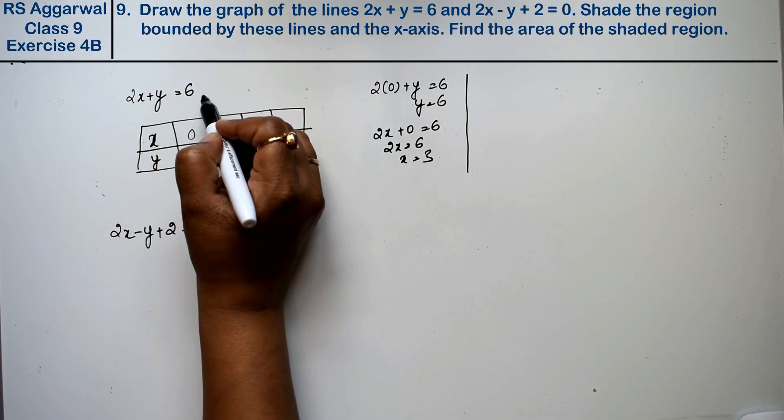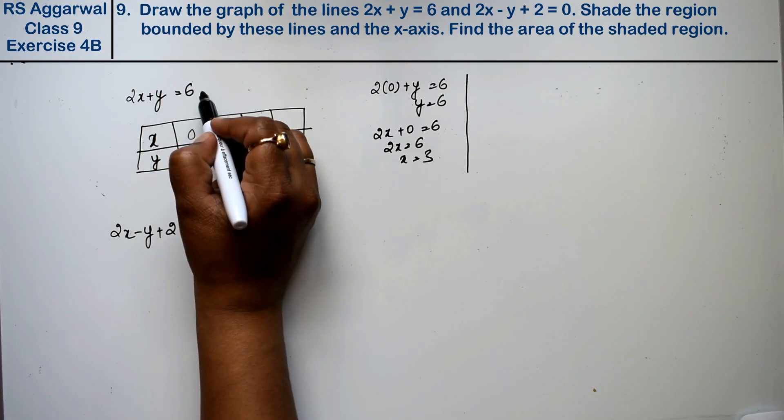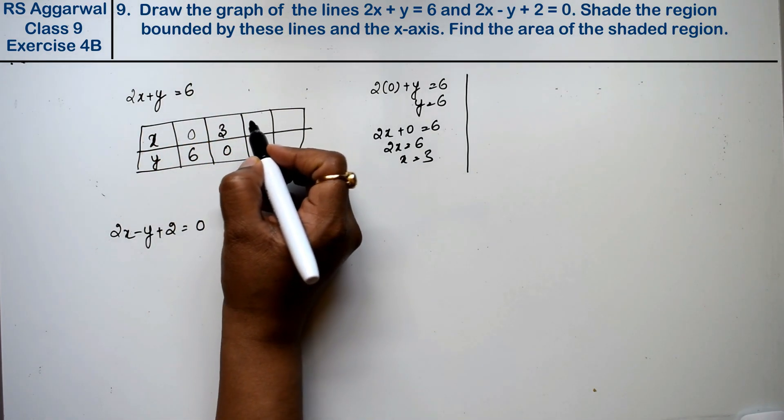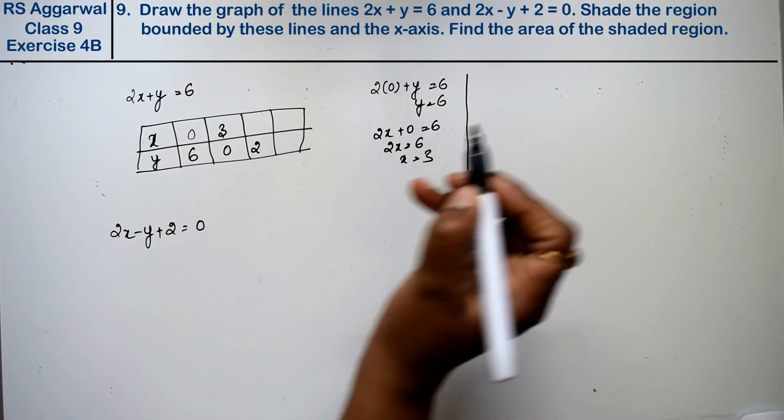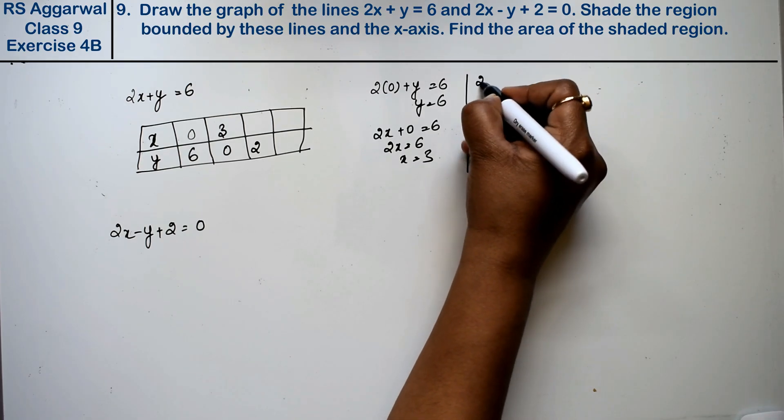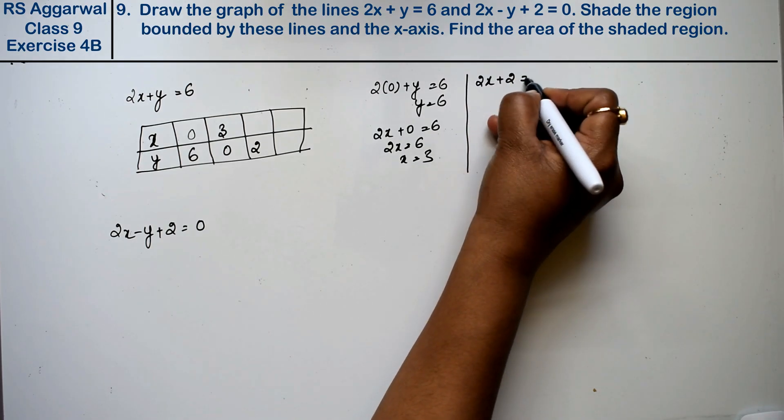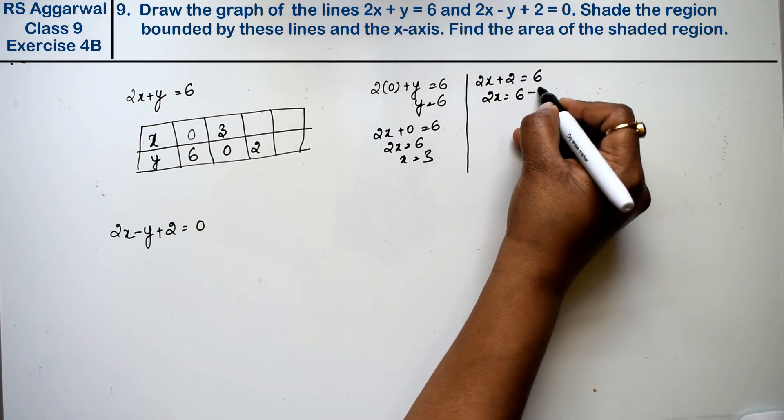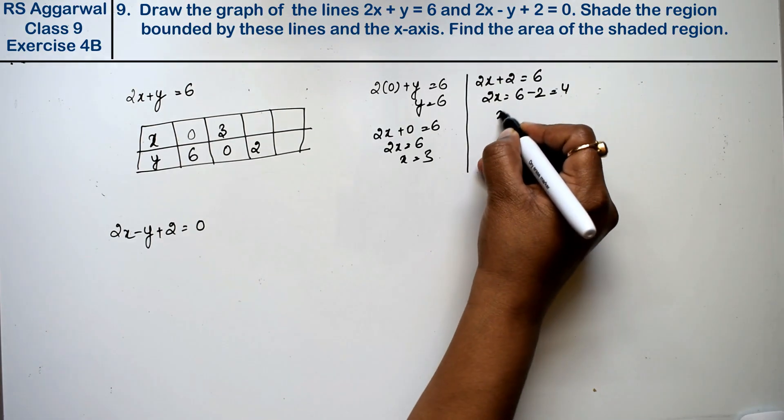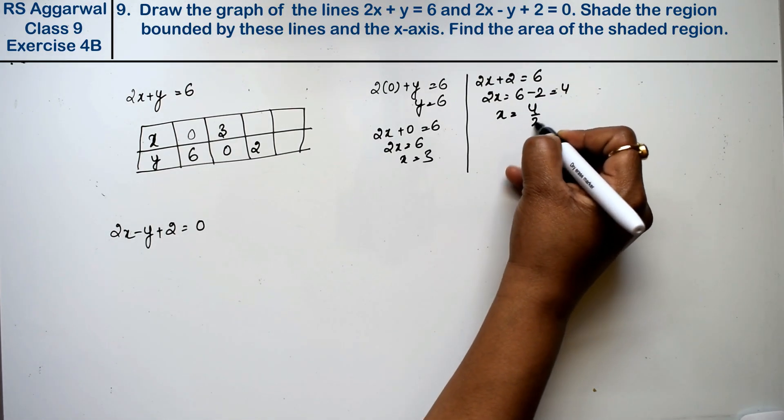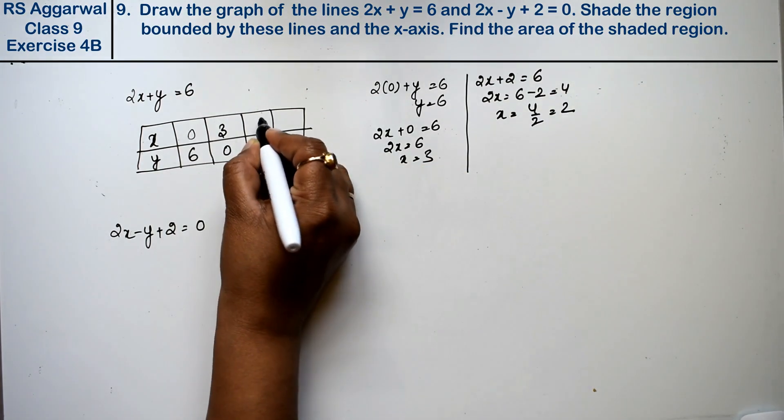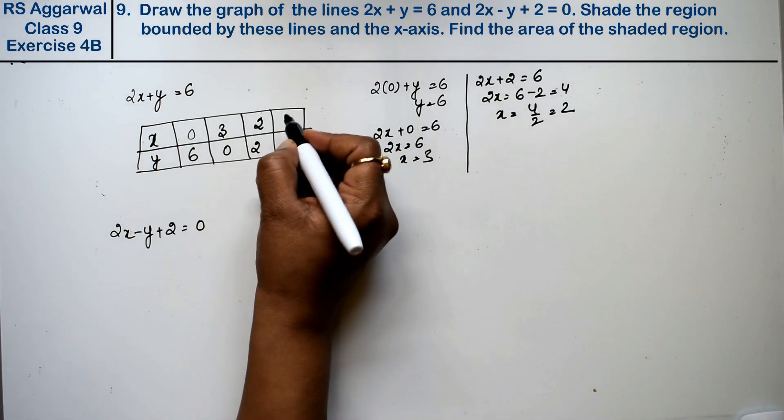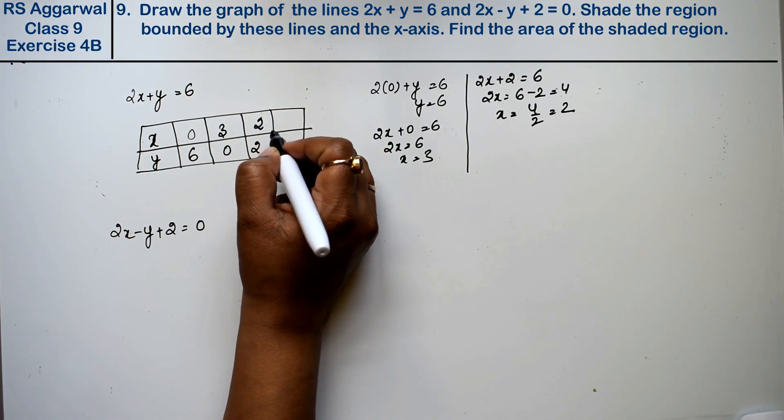Now if y's value is 1 then it will be 5 upon 2. We can't take 1, so we'll take y's value as 2. See, 2x plus 2 equals 6, so 2x equals 4. 4 upon 2, that is 2. So if we keep x as 2 then y is 2.